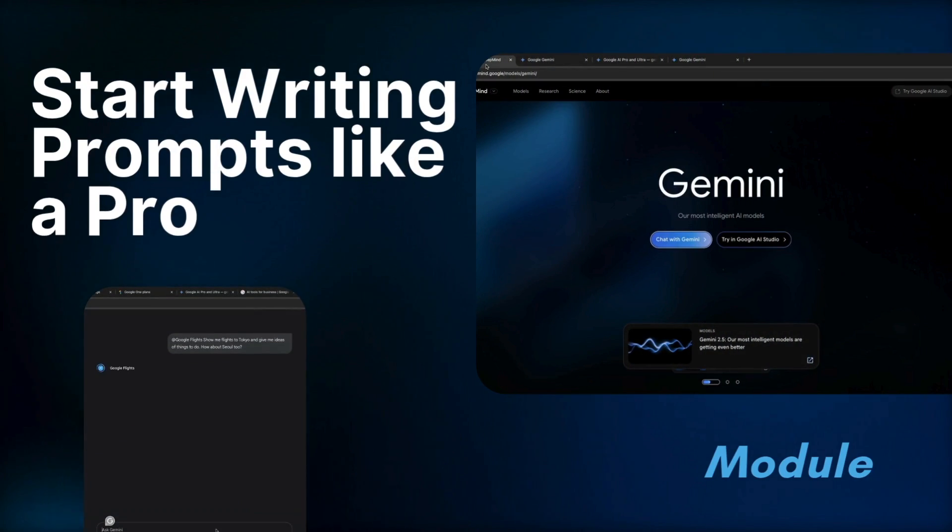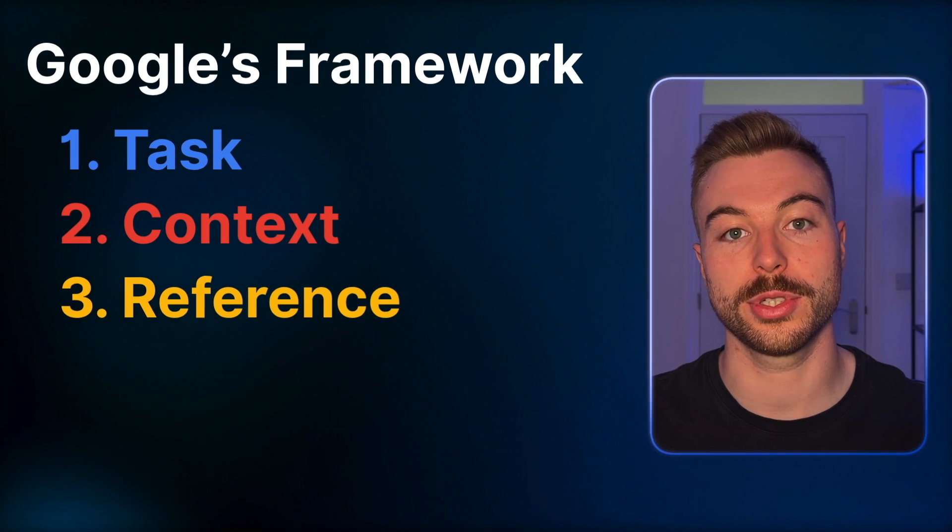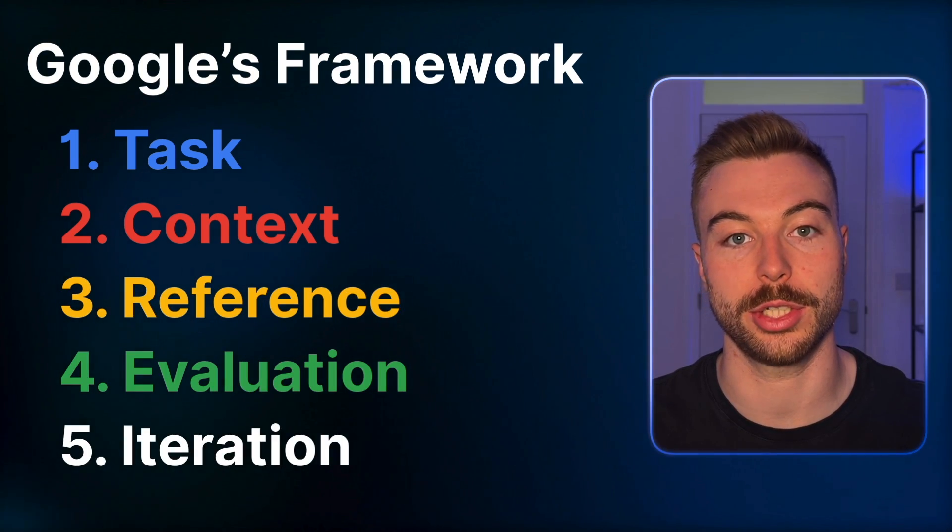First things first: prompt engineering. This is where it all begins. It's how we talk to AI in a way that actually works. Prompting is basically giving your generative AI tool of choice clear and specific instructions to help it generate something useful. Google has a five-step framework to structure your prompts properly: task, context, reference, evaluation, and iteration.